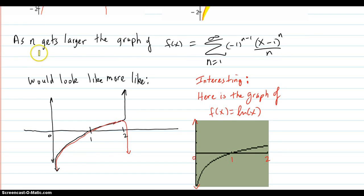As n gets larger, the graph of our original power series would look more like this here. It would just really bend up and go to infinity, almost straight. But it would be good at 2 and not good at 0. So it would be open circle, closed dot. Now interestingly, here's a graph of log of x. It looks exactly like this.